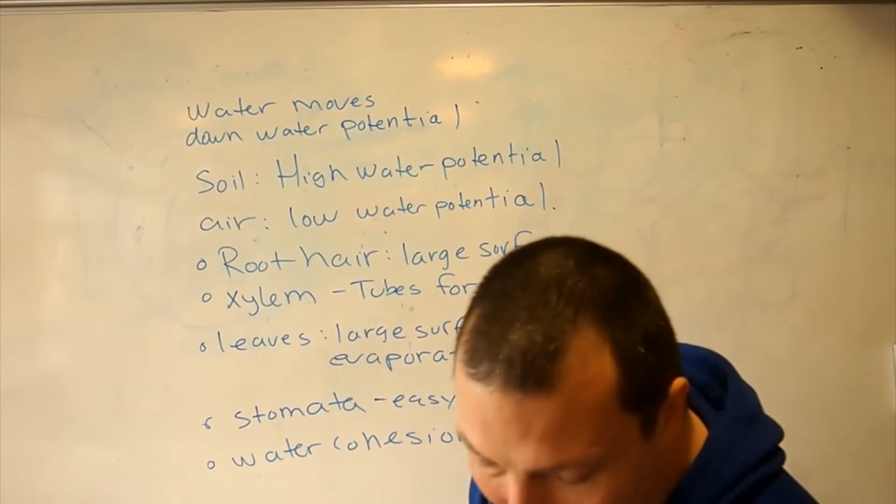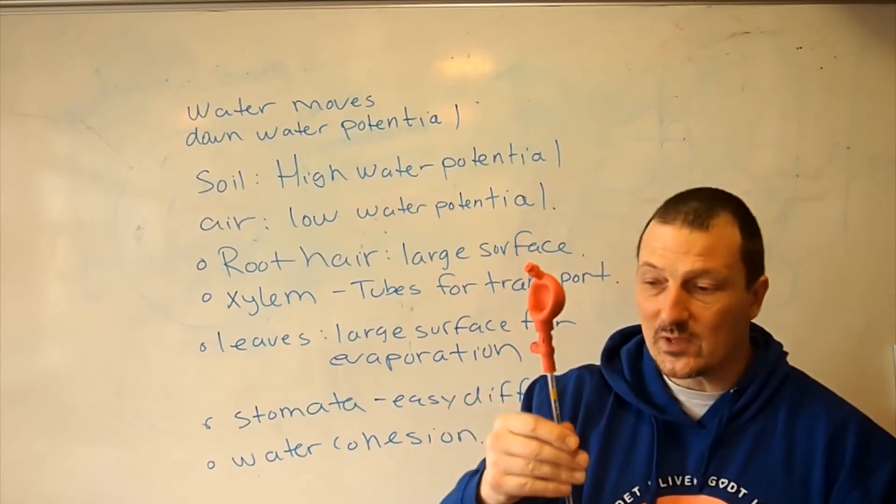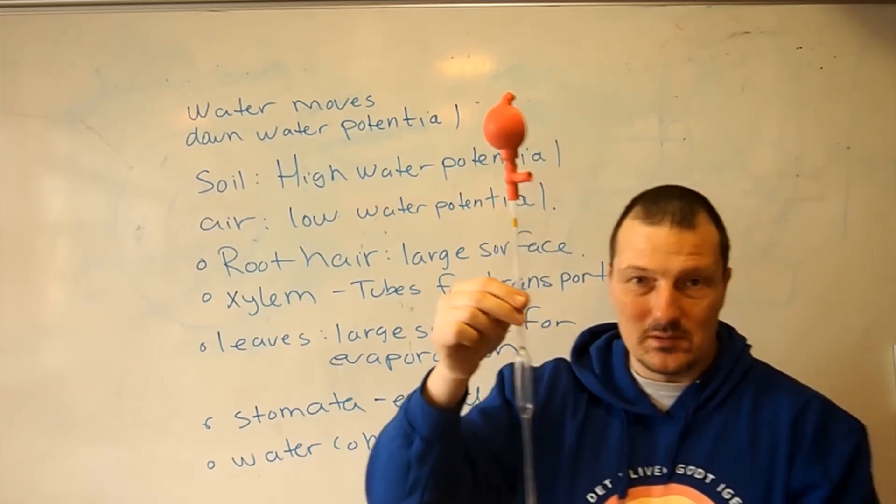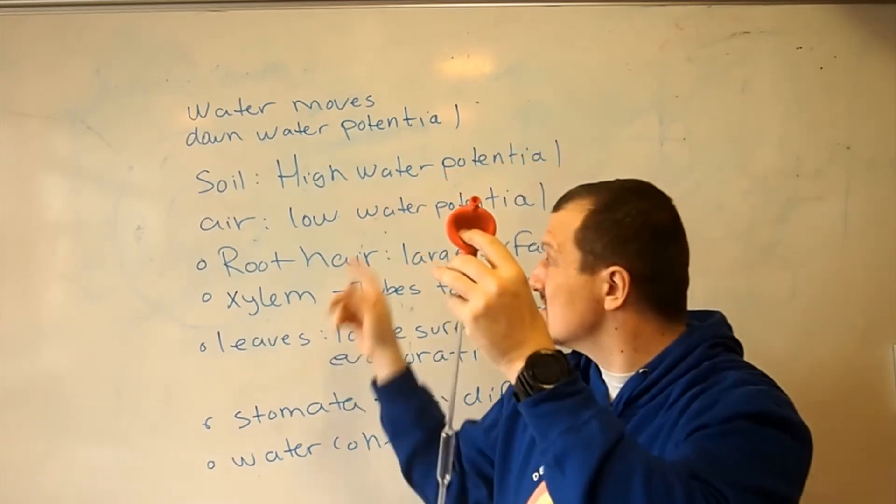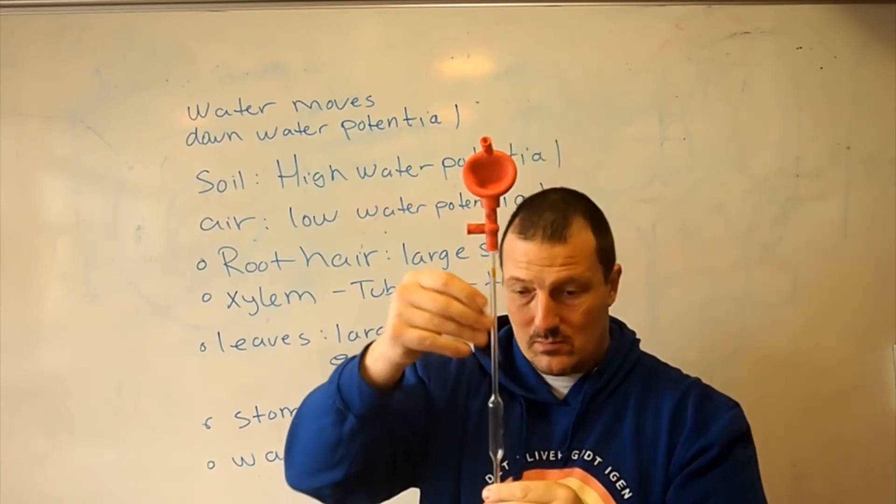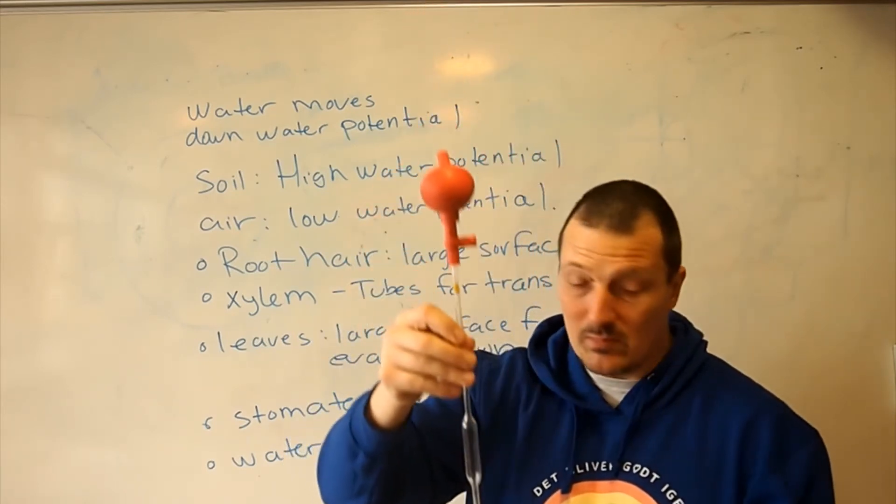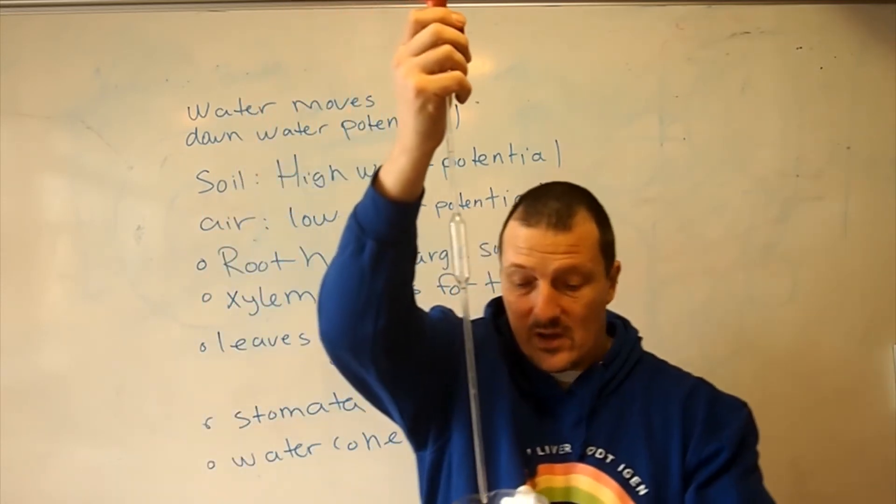And to illustrate that, I will make a short experiment here or illustration. This is a model, a model of the plant. The rubber ball up here that provides the suction, that is the low water potential in the leaf. This long glass tube here is the xylem, and then we have our roots.